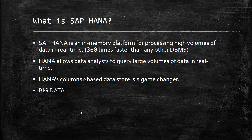Why is HANA so popular nowadays? There are many reasons and a few of them are here. HANA stores entire data in memory, that is in the RAM, so the processing speed will be very high. Ideally, it is 360 times faster than any other DBMS. With this capability, you can do real-time reporting on high volumes of data.